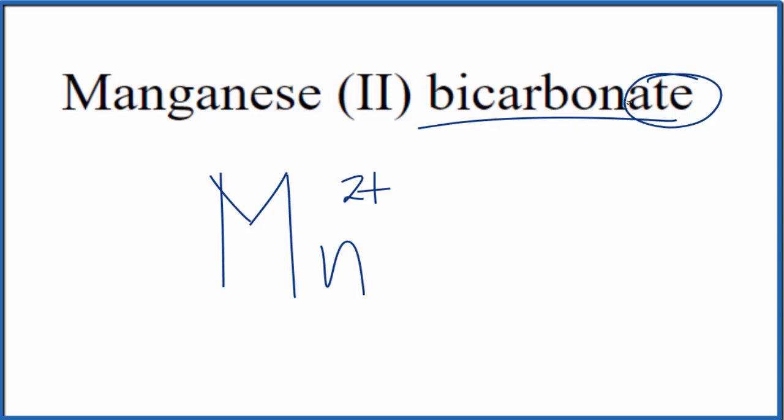Bicarbonate, when you see A-T-E, it's not going to be on the periodic table. This is a polyatomic ion, and you either memorize that the bicarbonate ion is HCO3 minus, or if you're allowed, you look it up on a table of polyatomic ions.